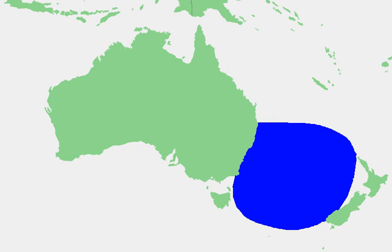The Tasman Sea is informally referred to in both Australian and New Zealand English as 'the ditch' – for example, crossing the ditch means travelling to Australia from New Zealand, or vice versa. The diminutive term 'the ditch' used for the Tasman Sea is comparable to referring to the North Atlantic Ocean as 'the pond'.